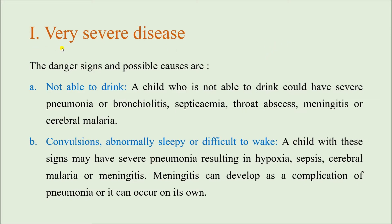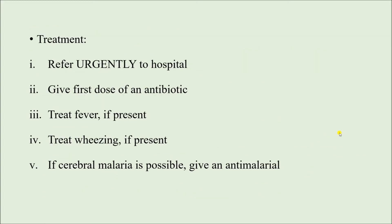Note that we say very severe disease, not very severe pneumonia, because these danger signs can occur for reasons other than pneumonia. Children suffering from very severe disease must be referred to the hospital and admitted for management — they cannot be managed at home. The first dose of antibiotic is to be given. If there is fever or wheeze, those are to be treated, and if cerebral malaria is a possibility, we must start anti-malarial drugs.